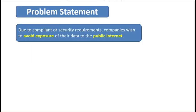Let us start with the problem statement. When starting this topic of the Google private access option, this means your company has the demand to use Google services or services hosted on Google Cloud Platform. The easiest way is to connect your company infrastructure, including resources hosted on-prem or on Google Cloud Platform, to Google services via the public internet. However, due to some compliance or policy requirements or data security reasons, some companies wish to avoid exposure of their data to the public internet entirely.